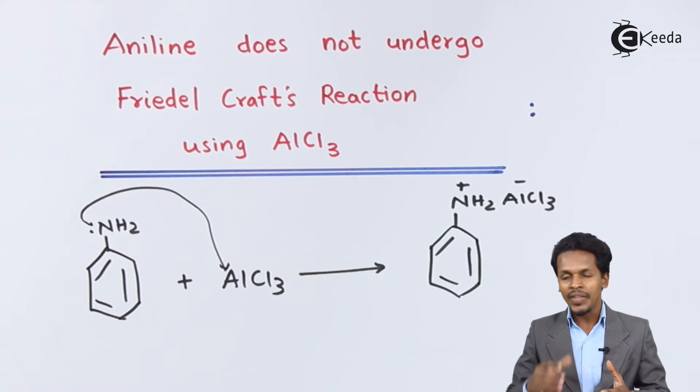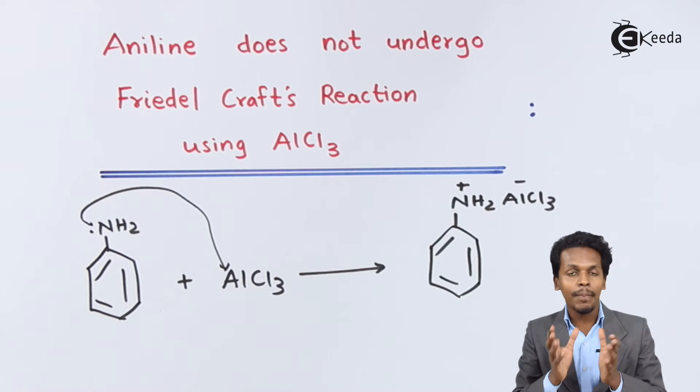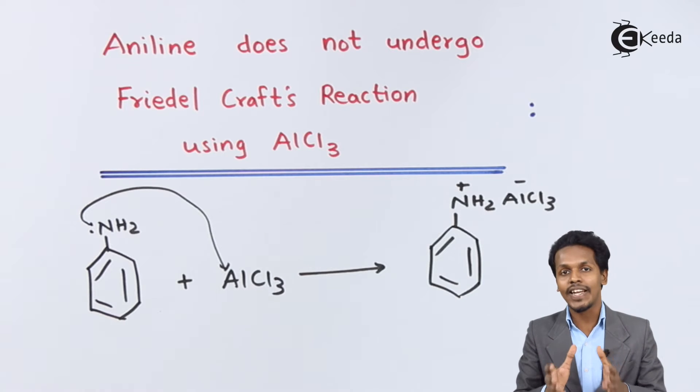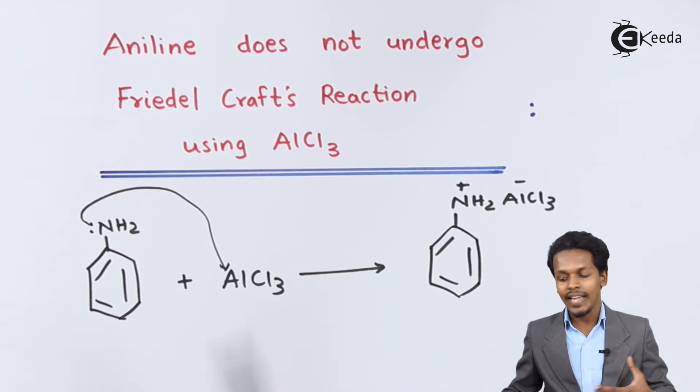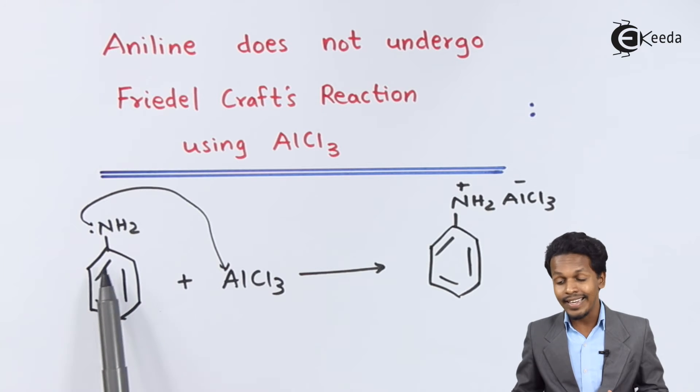Because this is acting like a deactivating group, obviously there will be no electrophilic substitution reaction, and that is the main thing that takes place in Friedel-Crafts reaction. This doesn't take place, and that's the reason we can't do Friedel-Crafts alkylation or acylation.